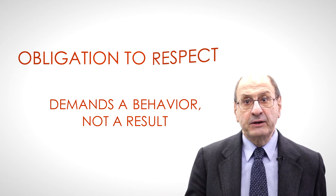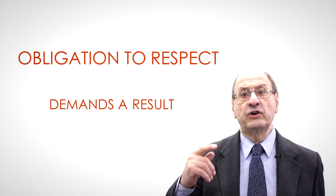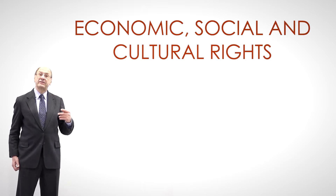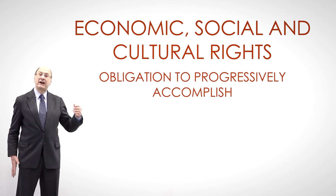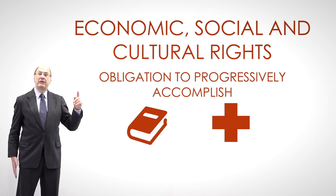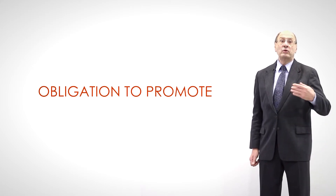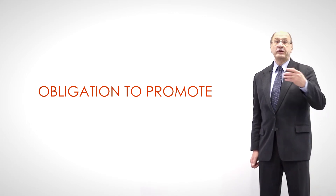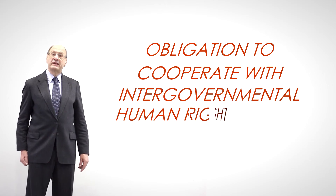On the contrary, the obligation to respect presupposes a result: that the value in question is not violated. In addition to these two obligations, many economic, social and cultural rights impose on states the obligation to progressively accomplish an intended goal, be it universal elementary education, adequate health attention for all, or other such public policy objectives. Further, some treaties oblige states to promote certain values, for instance to overcome stereotypes concerning women. This obligation may be seen as a separate distinct one, or as one more dimension of the obligation to ensure.